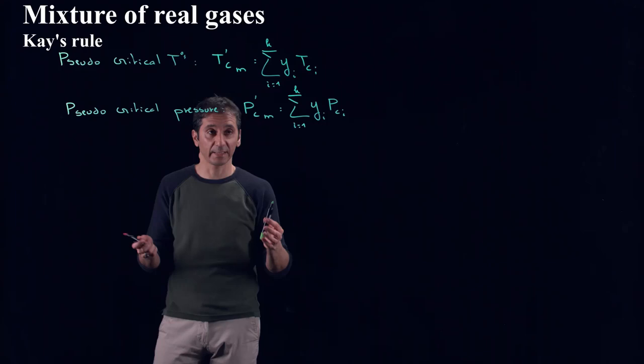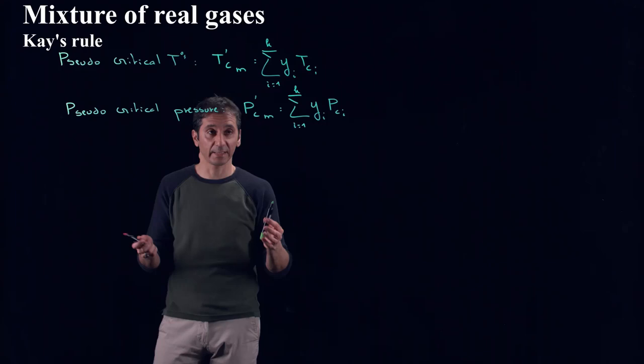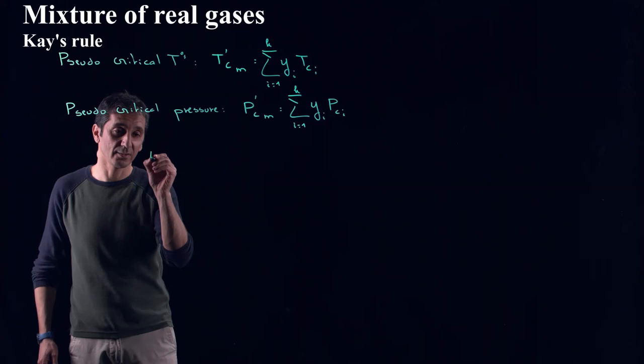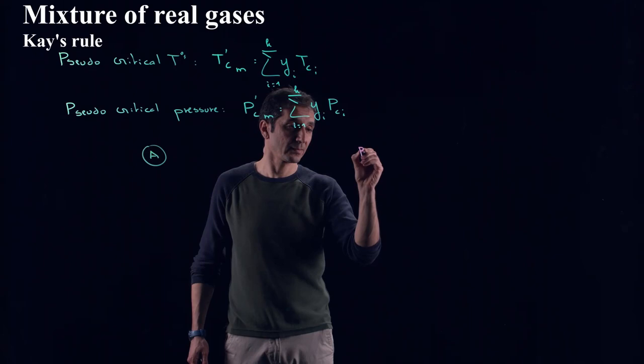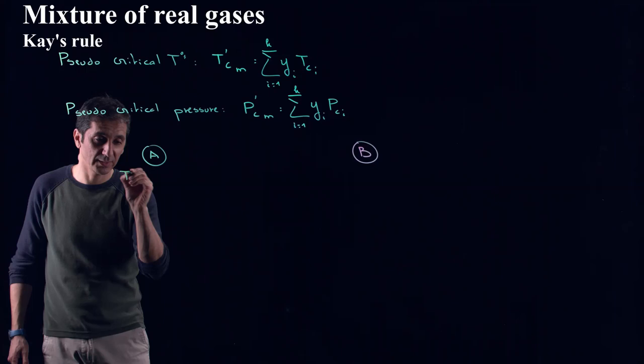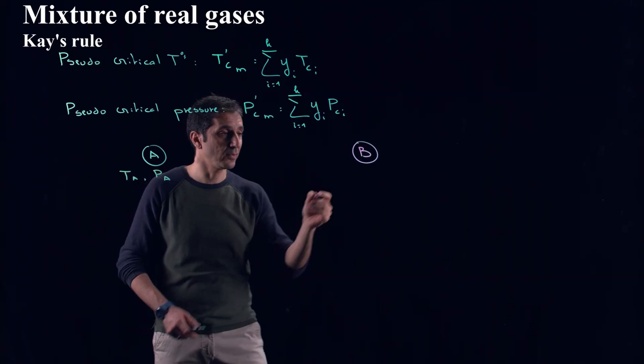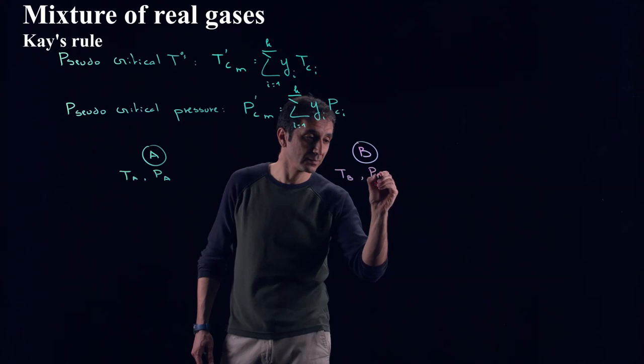Let's illustrate this using again two components. Let's assume we have A here and we have B here. So A is again defined by TA and PA and B is defined by TB and PB.